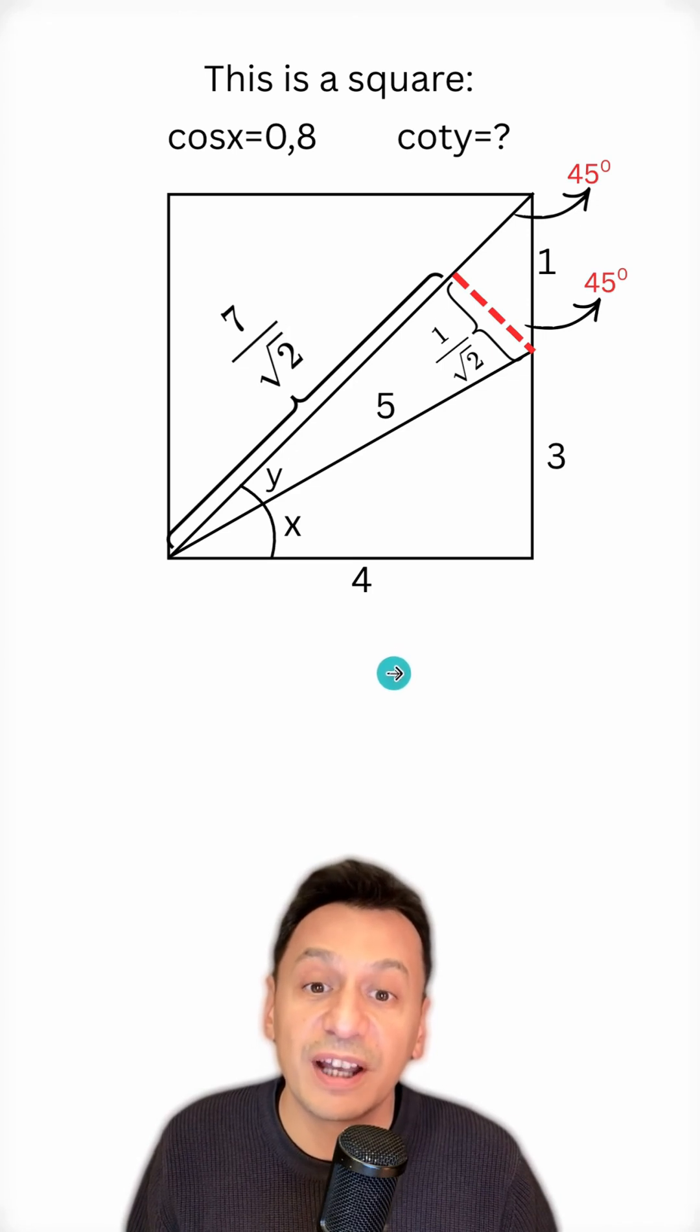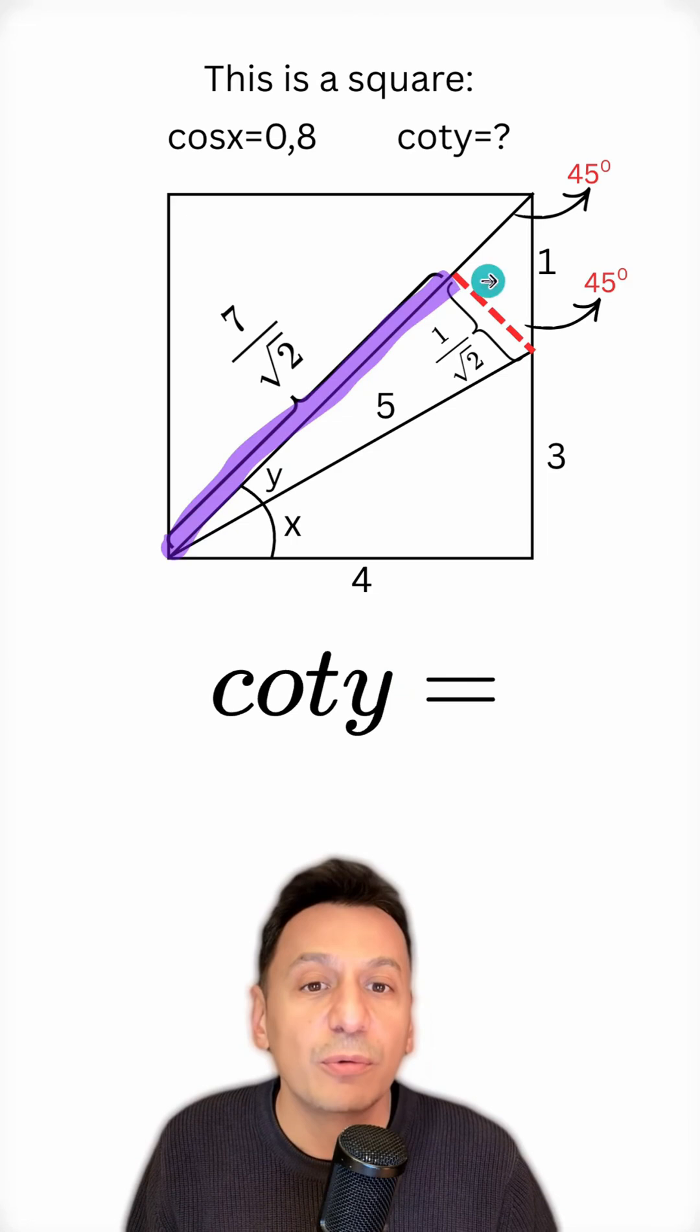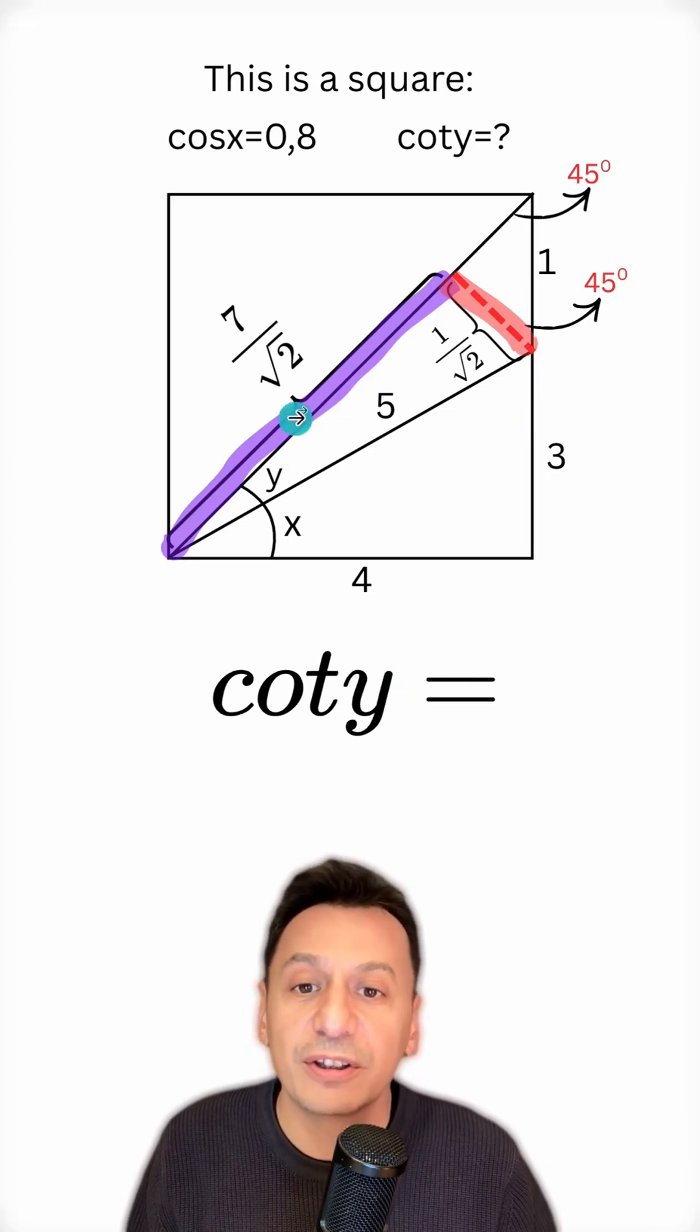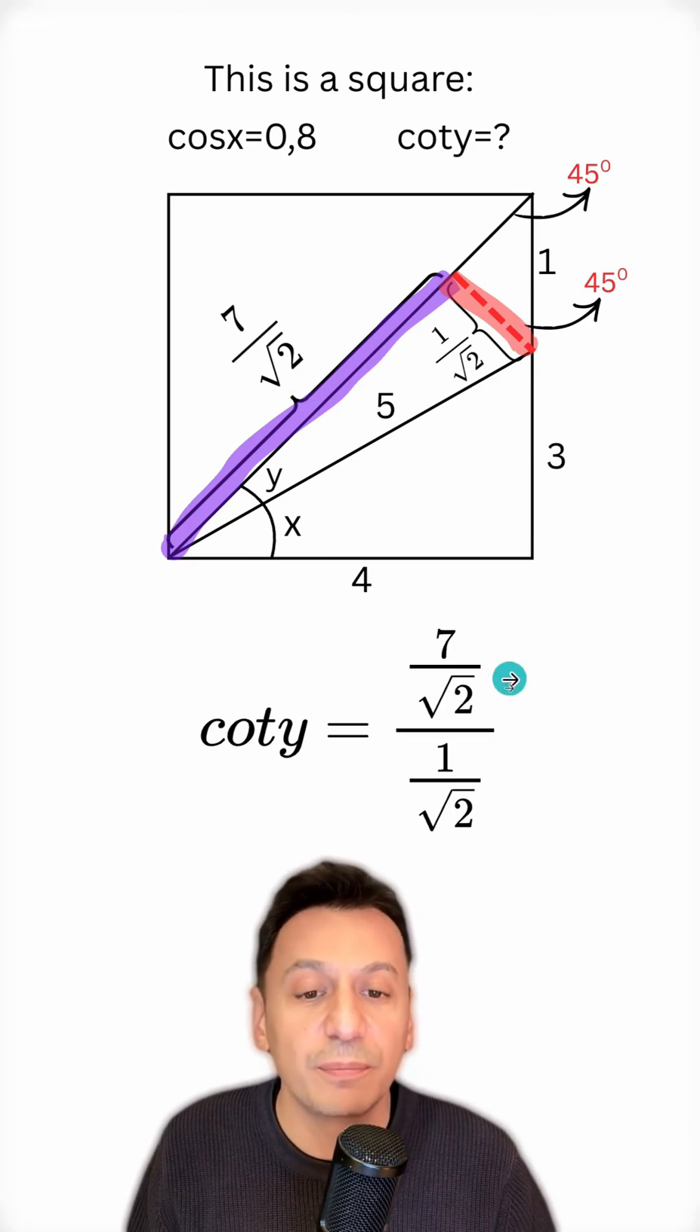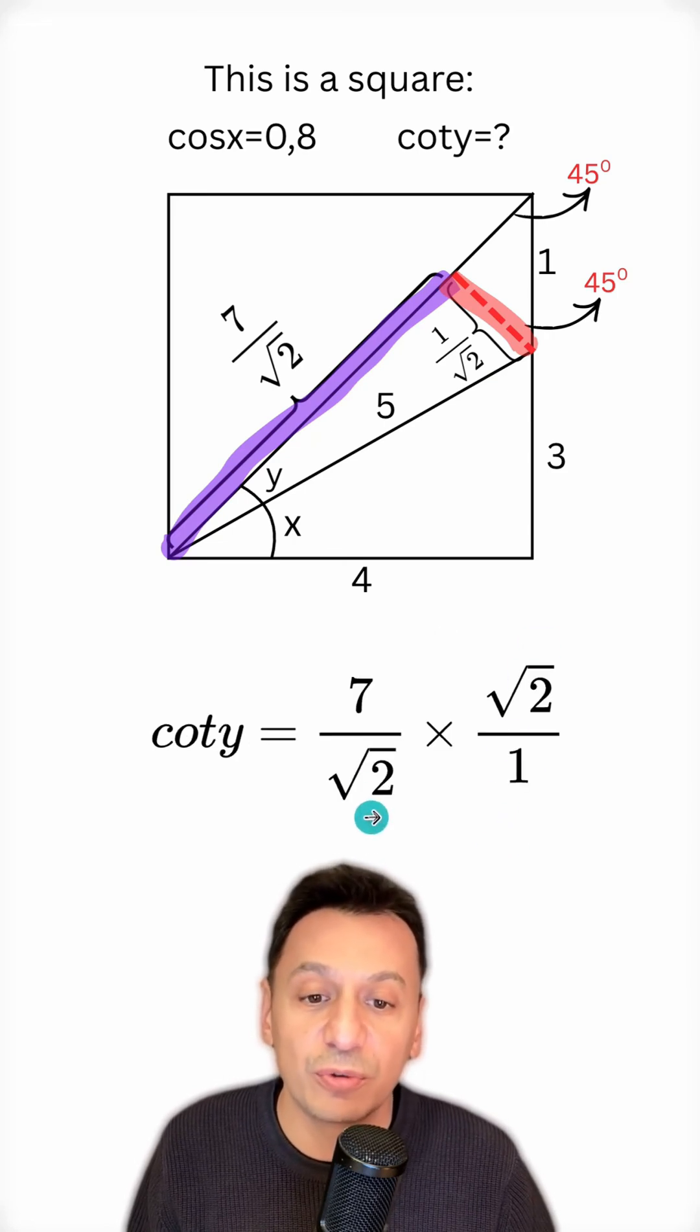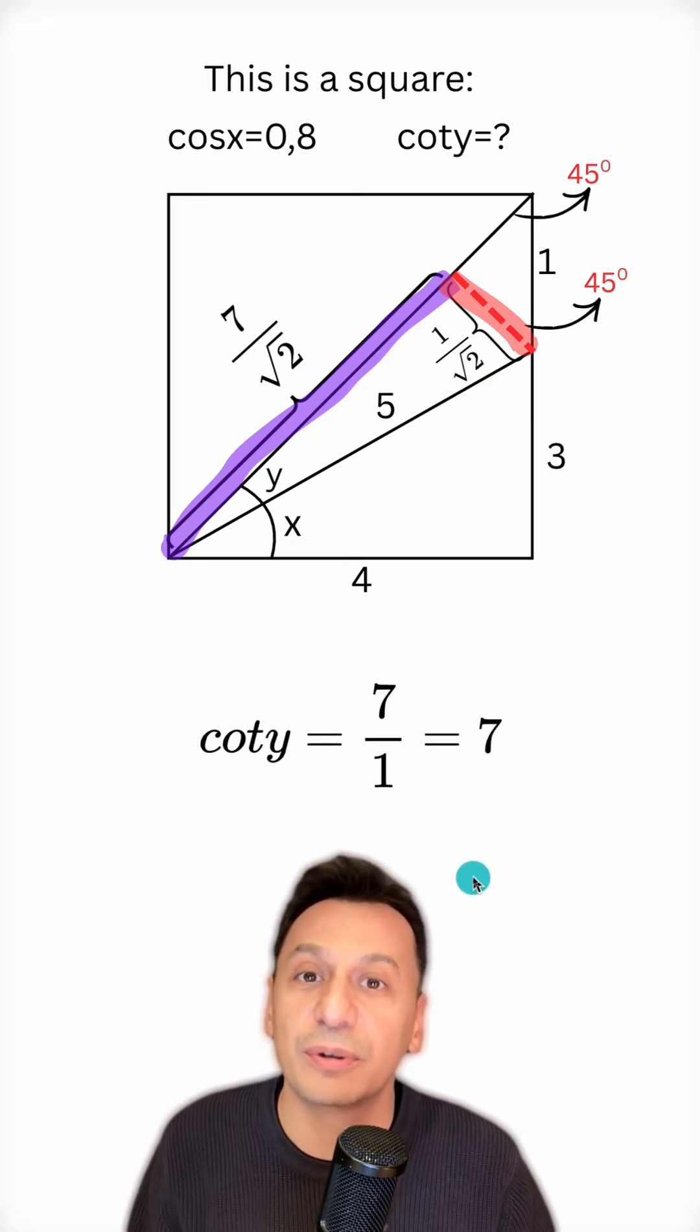I'm very close to finding cotangent y. All I have to do is find the ratio of the adjacent side of y to its opposite side, because that's what cotangent means. My adjacent side is 7 over root 2, and my opposite side is 1 over root 2. I write the numerator as it is, flip the denominator, and multiply. The square roots of 2 cancel each other out, and thus I find the value of cotangent y to be 7.